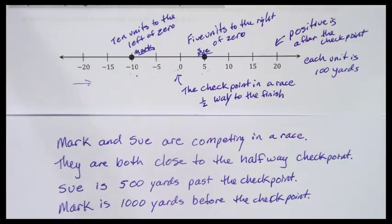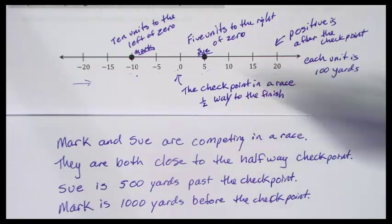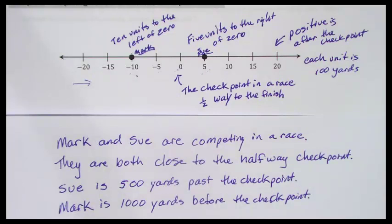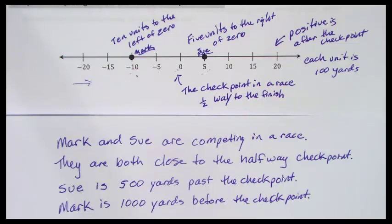In your homework tonight, you're going to use the same number line and write a story problem that is different from this one. Don't use Mark and Sue. Don't use a race. Make sure you talk about what your zero is going to be and how many units before and after zero you're talking about. Some options: you could talk about money — someone having $5 and someone owing $10. You could talk about distance from a location, like blocks from school. Zero can be lots of things; you just have to decide what it is.